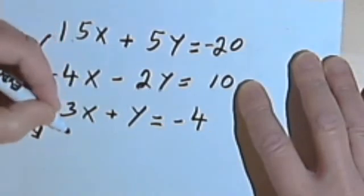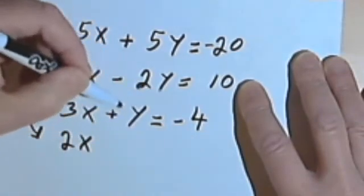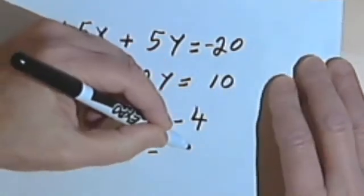So instead of 4x, it's just 2x. Instead of negative 2y, it's just gonna be negative y. And instead of 10, it'll be 5.